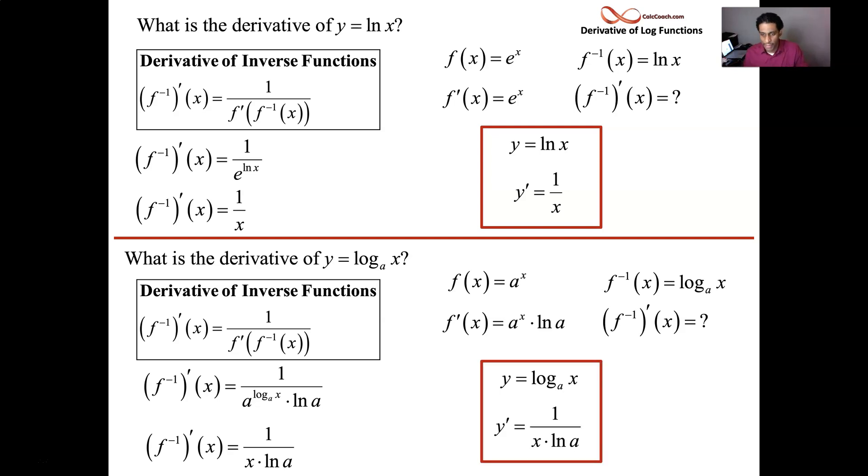So we'll file these things away. We'll remember them and use them. Now we know why they are. They come from the fact that they have these inverse functions, and we know the derivative of their inverse. So we can know their derivative.